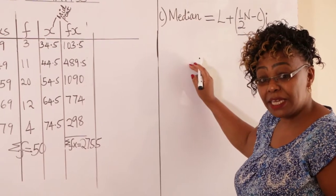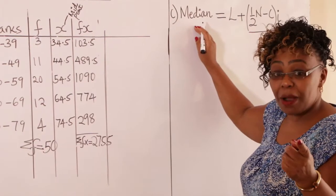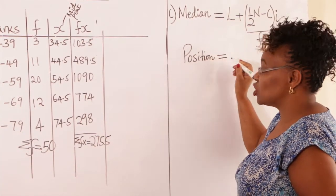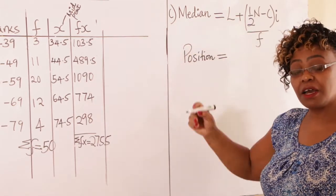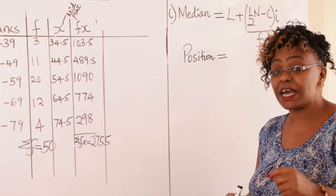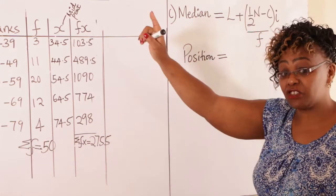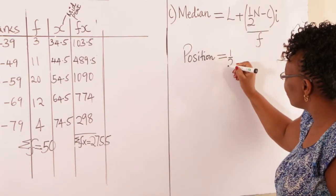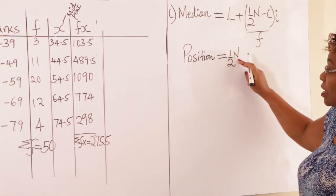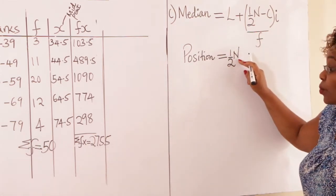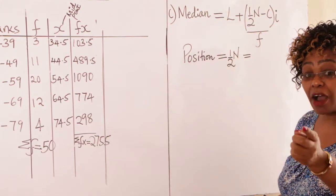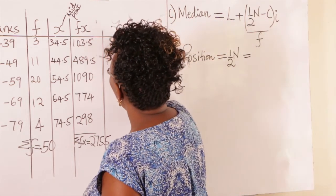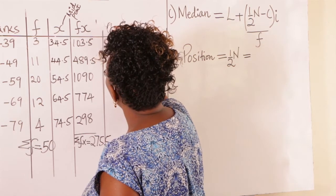To calculate the median, first identify its position. The median is the value that falls at the middle of the data when arranged in ascending order — it falls at half of N, where N is the total frequency. To find N, add a cumulative frequency column to your table.